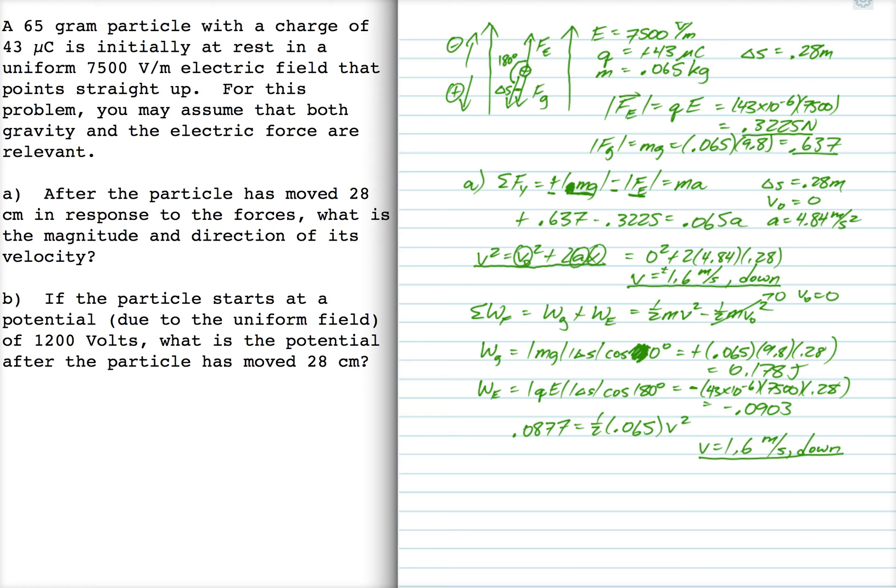Now part B. I'm going to redraw this just so you have a little more because my upper diagram is a little too crowded. So here's my uniform electric field pointing upward, and this charge is moving down. Now remember that electric field lines point from high potential to low potential.